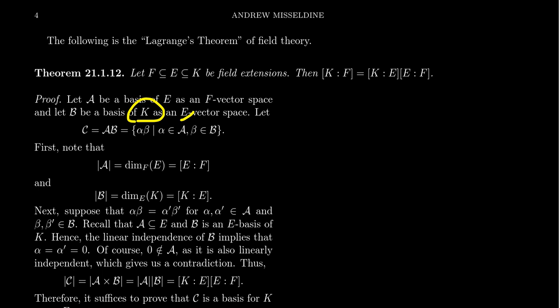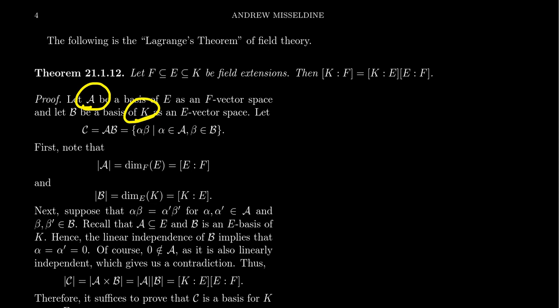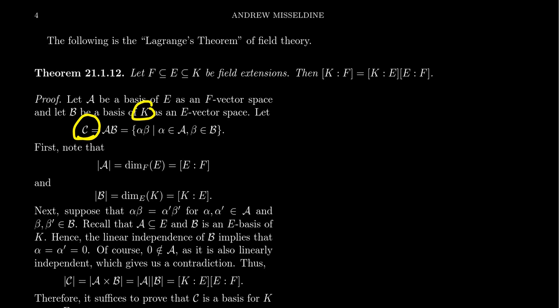It makes sense to view K as both an E-vector space and an F-vector space; the basis when viewed as an F-vector space will be much larger. So be aware that basis B is viewing K as an E-vector space right now. Since E is a subfield of K, the elements of A which belong to E can also be viewed as elements of K. Consider the set C, which is the set of all possible products α·β, where α is an arbitrary element of basis A and β is an arbitrary element of basis B. We claim that this set C forms a basis for K viewed as an F-vector space.